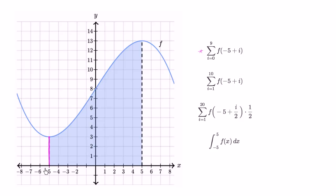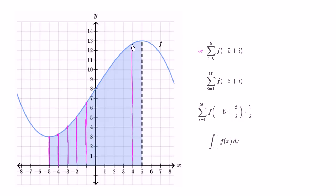That's that height right over there. When i equals one, it's going to be negative five plus one, which is negative four — so it's that height right over there. And then negative five plus two when i equals two, so it's going to be that height right over there. So we're essentially going to sum up all the way from negative five, and negative five plus nine gets us all the way to four. You might be guessing: how do I relate this to area?